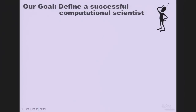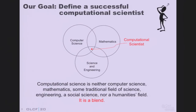Our goal is to define a successful computational scientist. What does that mean? Use computing to answer a scientific question — excellent. Use computing effectively — okay. I don't have the answer right now, so hopefully over the course of the next hour we'll come to some agreement. Computational science, to me at least, is that intersection between computer science, mathematics, and some scientific or engineering domain. We're trying to live at that intersection. That's a challenging intersection — we need a lot of tools to competently address all three of those areas.